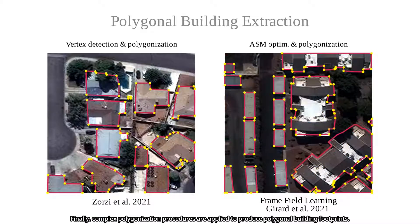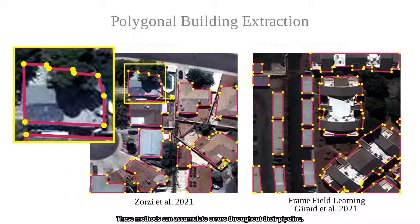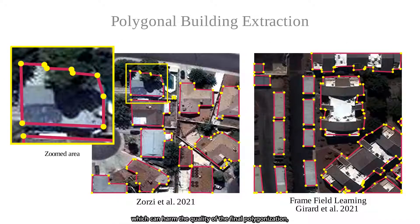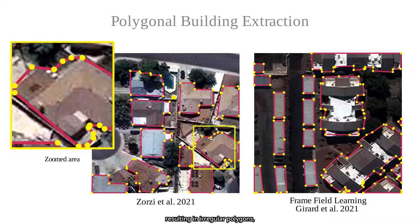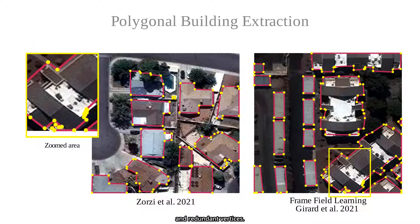Finally, complex polygonization procedures are applied to produce polygonal building footprints. These methods can accumulate errors through their pipeline, which can harm the quality of the final polygonization, resulting in irregular polygons, unrealistic edges, and redundant vertices.